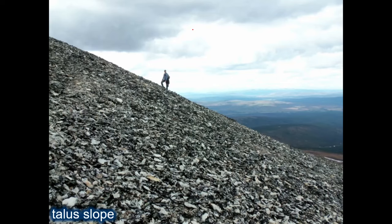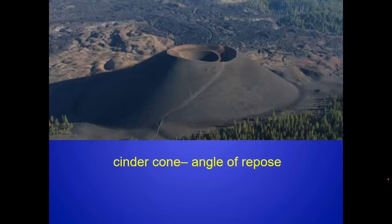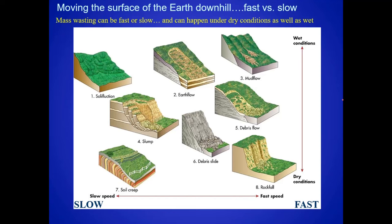That's how mass wasting happens — the angle of the sediment, whether it's 45 degrees or 30 degrees, causes it to collapse due to the angle of repose. There's a cinder cone showing this angle of repose. If that angle grows too much, you can have collapse and mass wasting.